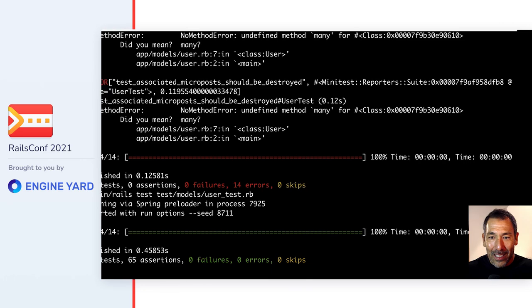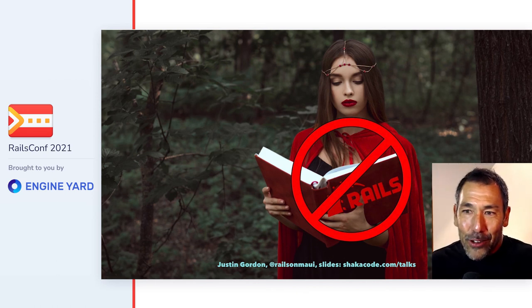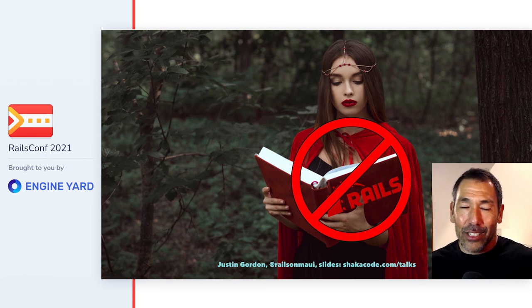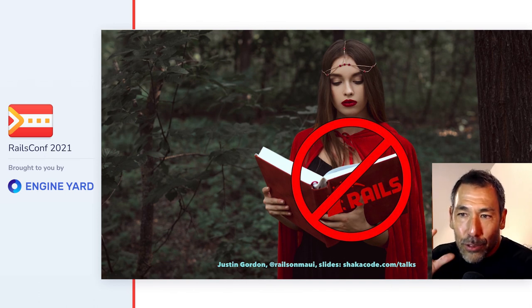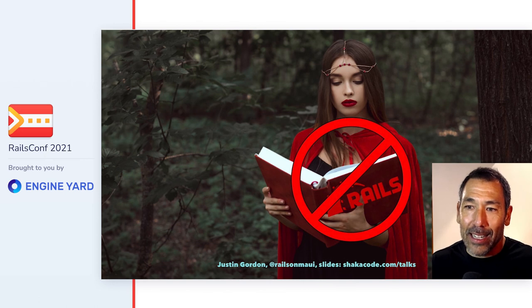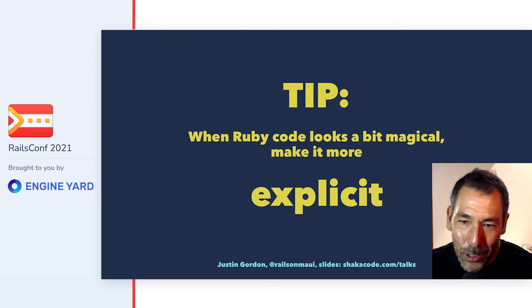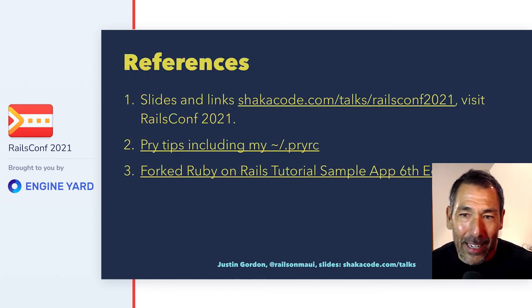Great — you made it! I hope by now you really realize there's not a lot of magic in Rails. It's not magic — it's just syntax that has a lot of implicit parens, implicit self, implicit variable declaration, and implicit variable assignment. Once you're able to read the Ruby code and make those implicit things explicit, you can have a much better understanding. When Rails code looks magical, try to make it more explicit in your head, and explore it with `binding.pry`.